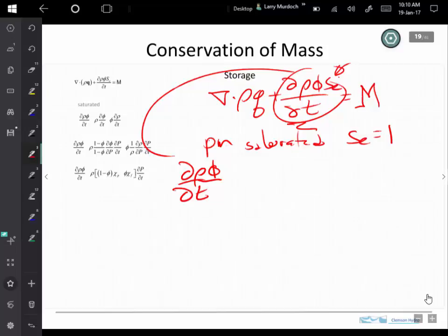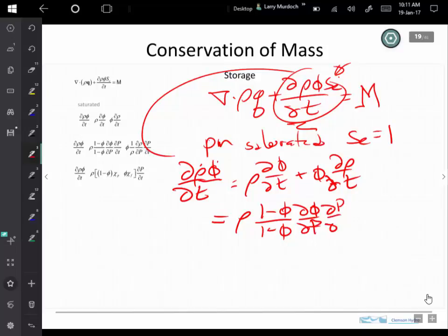So this is the change in density and the porosity. We write this like this. We use the product rule and expand those two terms out. And then we say, well, this is the change in the porosity with time.